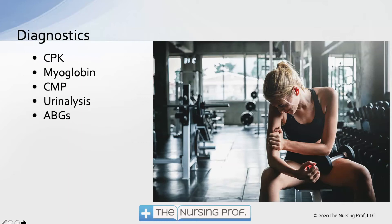Diagnostically, the big test we're looking for is the CPK. An elevated CPK helps us determine how much rhabdomyolysis is possible and how much myoglobin is in the bloodstream. Remember, there are three types of CPK: CPK-MB, which we look for with heart problems; CPK-BB, coming from the brain; and CPK-MM, which comes from the muscle. We don't need to run isoenzymes — we just see a sky-high CPK in a patient with muscular injury. We can also see an elevation in myoglobin, but CPK is usually our critical diagnostic criteria.